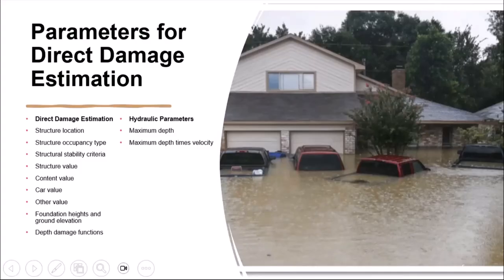So what matters for direct economic loss? It's a lot of the same structure characteristics and categories that are relevant for life loss. Structure location, the depths and velocities — these matter just as much to direct damage to the structure as they do to life loss. It's just that instead of focusing on the population in those buildings, you're focusing on how much the structure was worth, how much the contents were worth, and the same for agriculture.